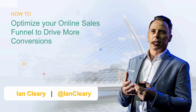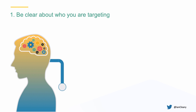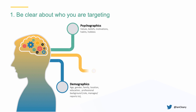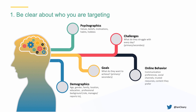I want to share some practical tips about optimizing your online sales funnel to drive more conversions. First, you need to be really clear about who you're targeting — spend time mapping this out. Think about the demographics: the age and gender of the people you're targeting, their psychographics, their values and beliefs, their goals, what they want to achieve, their daily challenges, their online behavior, what social networks they hang out on, who are trusted resources they listen to online, and how you can actually help.